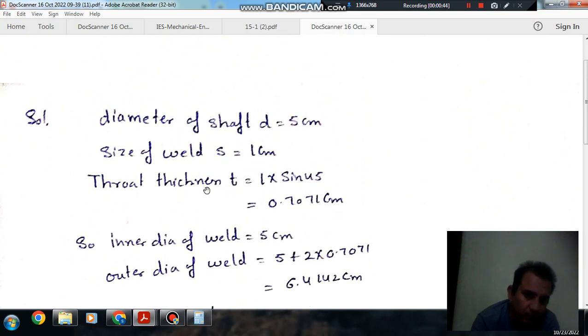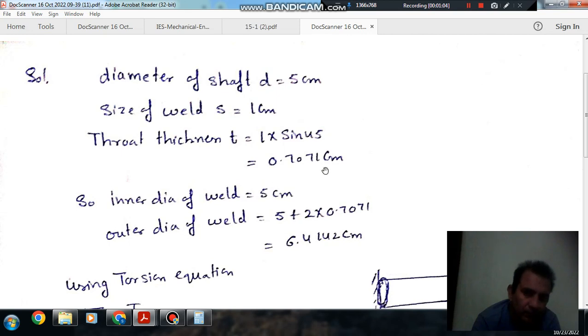The throat is at an angle of 45 degrees to the leg. Since the weld size is 1 cm, the throat thickness equals 1 divided by root 2, which is 0.7071 cm. So the throat thickness is 0.7071 cm.